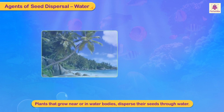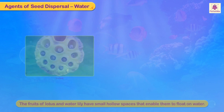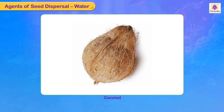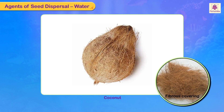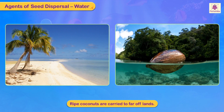Water: plants that grow near or in water bodies disperse their seeds through water. The fruits of lotus and water lily have small hollow spaces that enable them to float on water. Coconuts have a fibrous covering that makes them light; the ripe coconuts which fall naturally into water are carried to far-off lands.